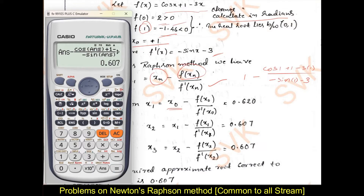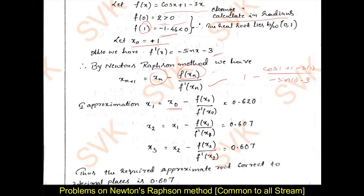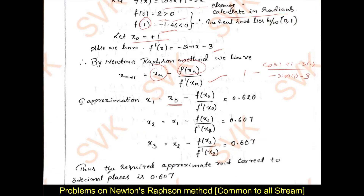Press plus equal to again, you get 0.607. Press plus equal to again — you are getting the same answer for the third iteration also. Once you get the same approximation for two iterations, you can stop at that stage and say the real root exists at that value. Thus, the required approximate root is 0.607.